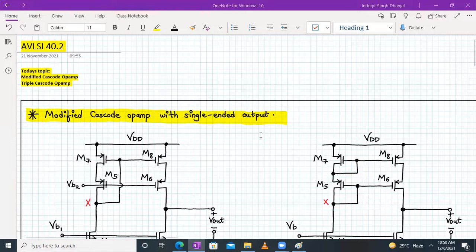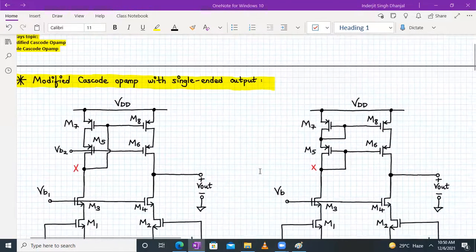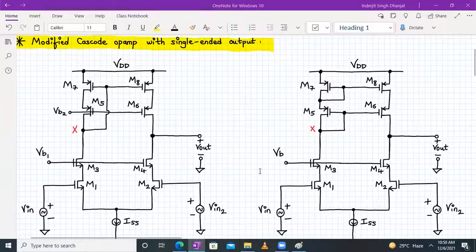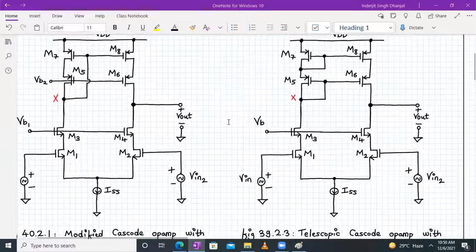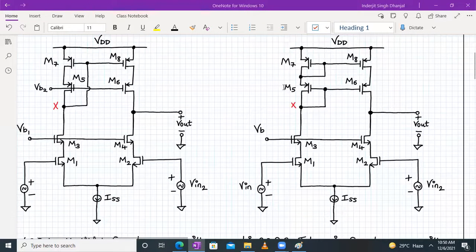Hello everyone, welcome to AVLSI lecture number 40.2. Today we are going to discuss modified cascode op-amp and triple cascode op-amp. In the last lecture we discussed telescopic cascode op-amp with a single-ended output.